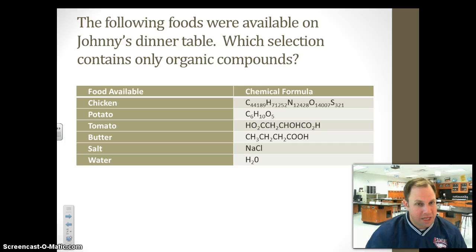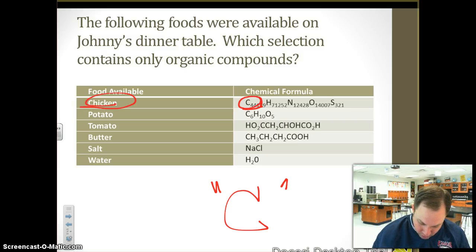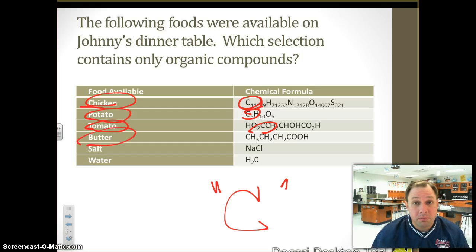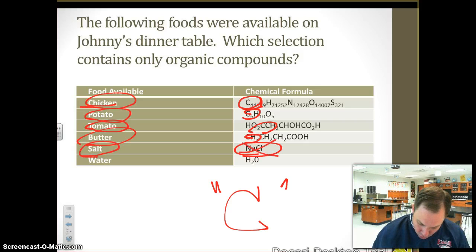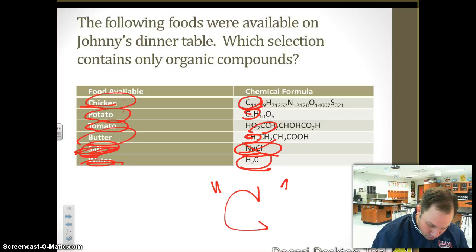The following foods were available on Johnny's dinner plate. Which selection contains only organic compounds? Organic compounds contain carbon. Chicken comes from a living thing — it has carbon. A potato comes from a living thing — it has carbon. A tomato is from a living thing — it also has carbon. Butter comes from milk, milk comes from cows, it comes from a living thing — carbon. Salt: no carbon. Water: no carbon. So water and salt do not contain carbon. Which ones contain only organic compounds? Chicken, potato, tomato, and butter.